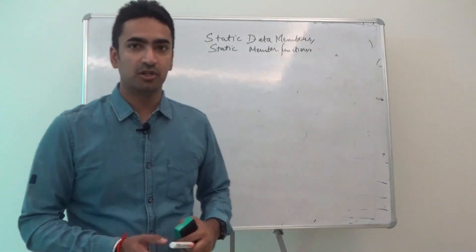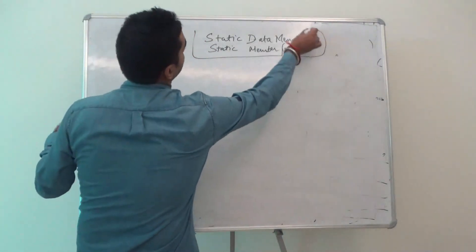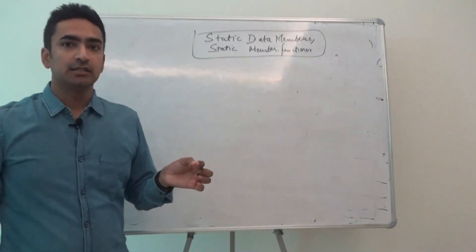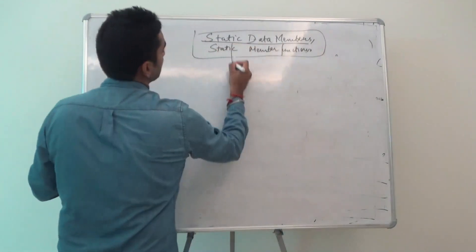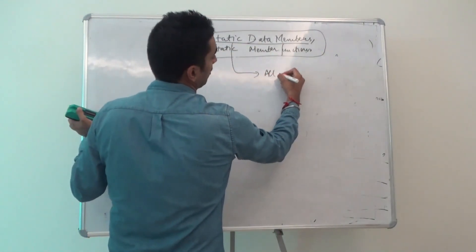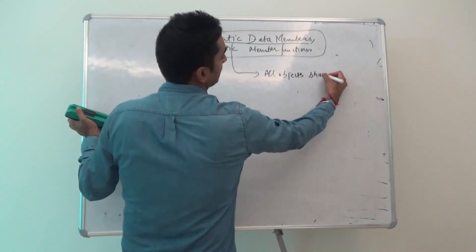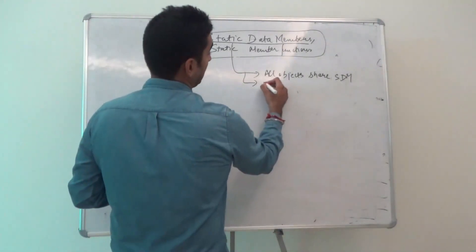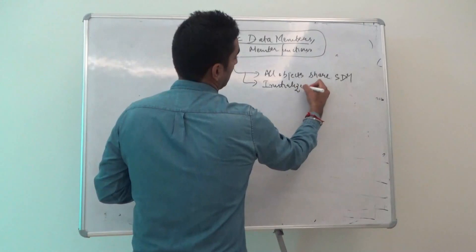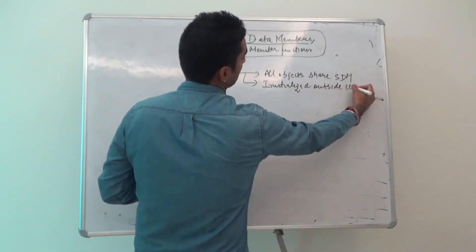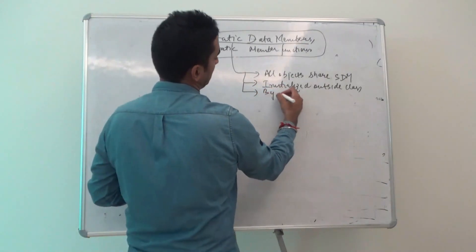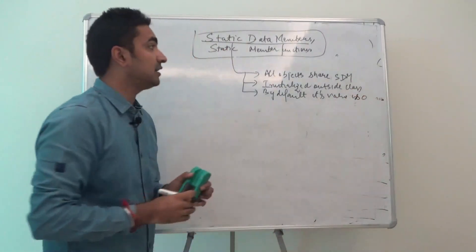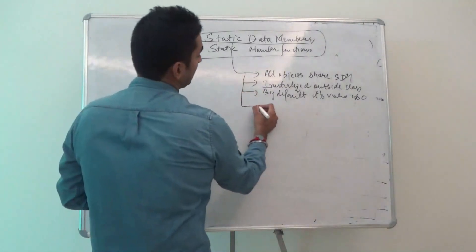Kindly watch the video till the very end and support us. We'll start with static data members and static member functions. First, we have to understand the properties of static data members. First property: all objects share static data members. It has to be initialized outside the class. By default its value is zero.